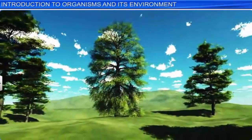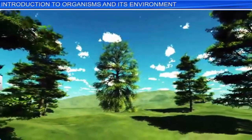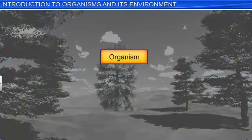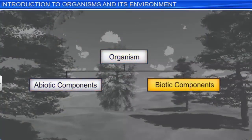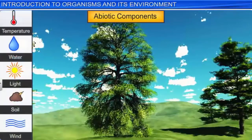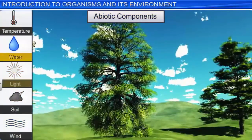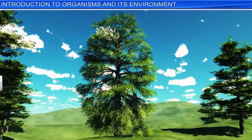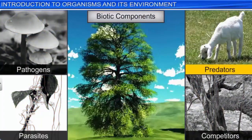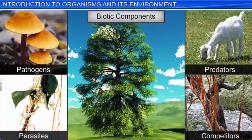When you look at this tree, you may think it is growing independently. However, the reality is that no living organism, including this tree, can grow in isolation. Every organism is surrounded by a host of abiotic and biotic components of the environment with which it continuously interacts. This tree is influenced by abiotic components such as temperature, water, light, soil, and wind. Biotic components such as pathogens, parasites, predators, and competitors also play an important role in its survival.